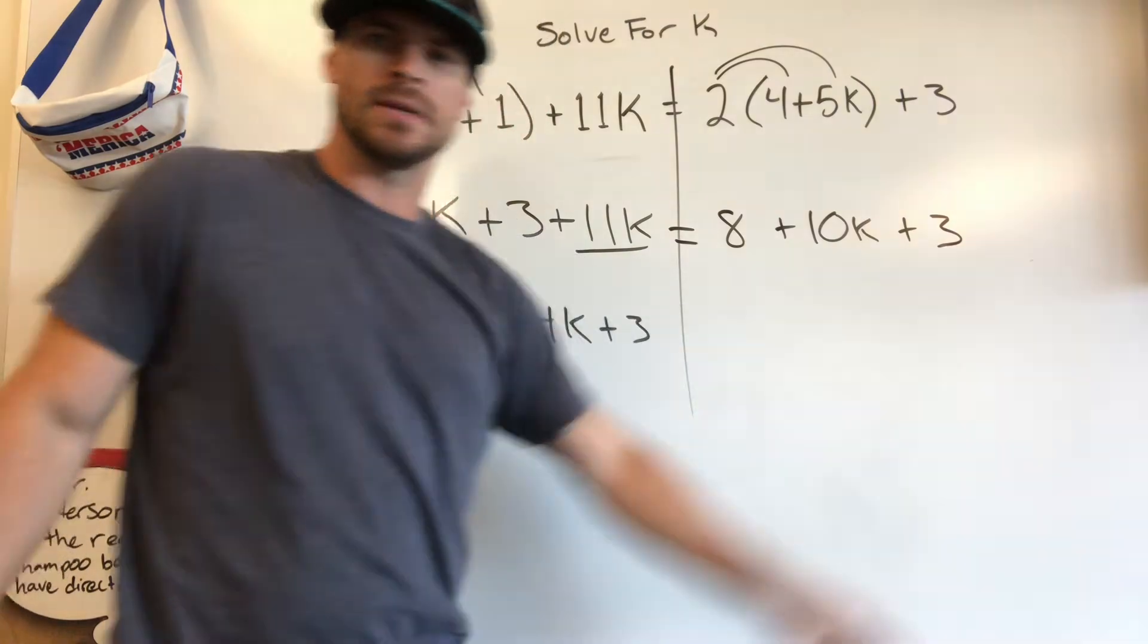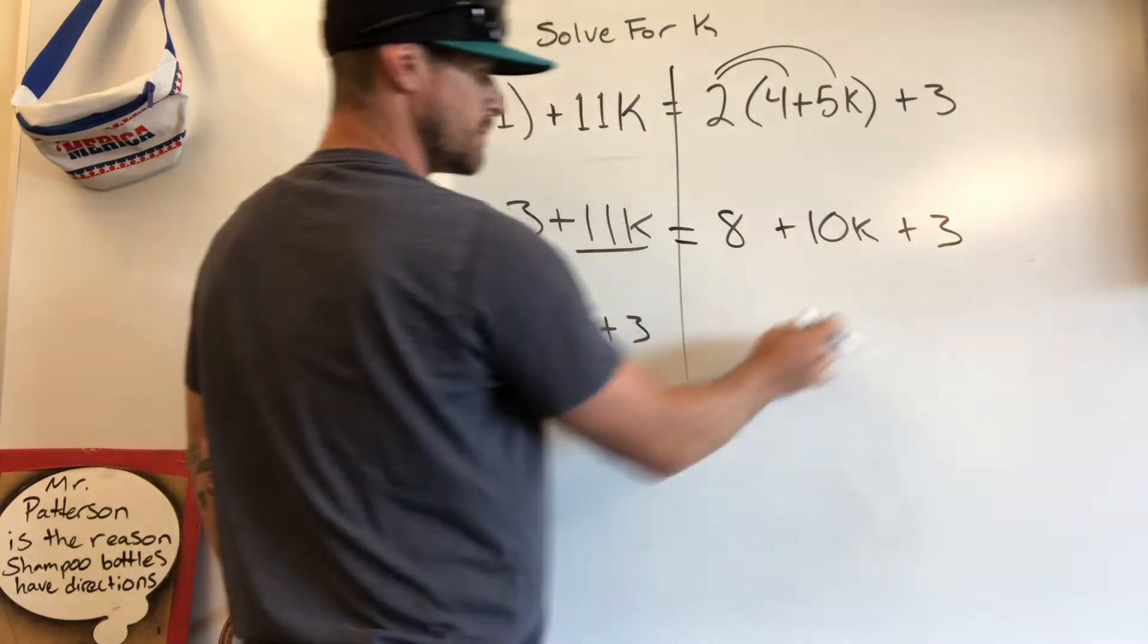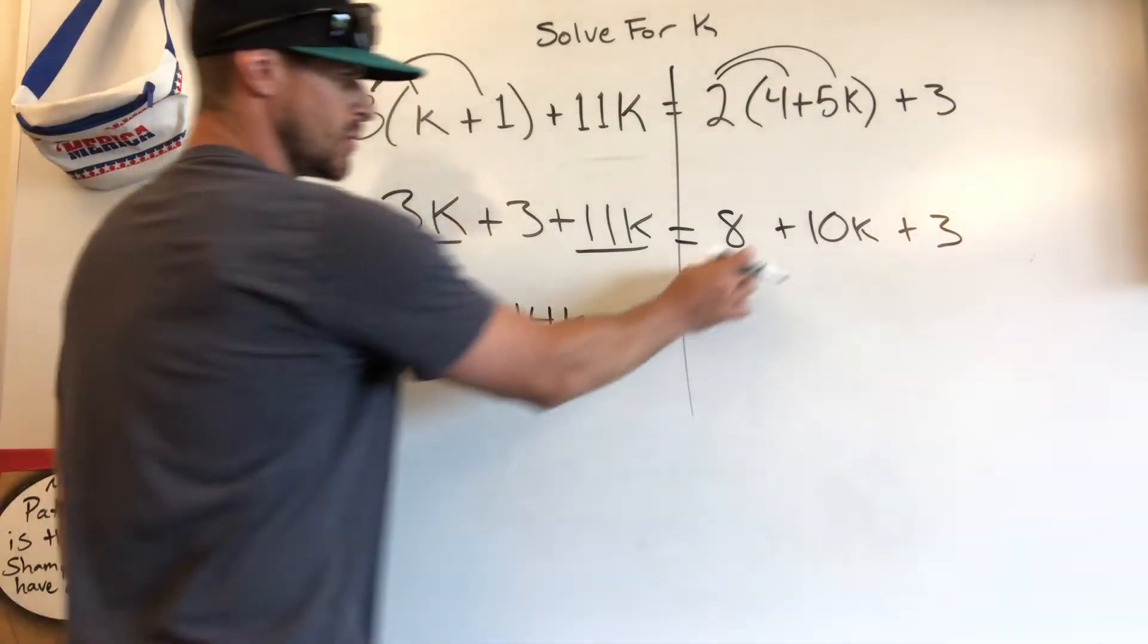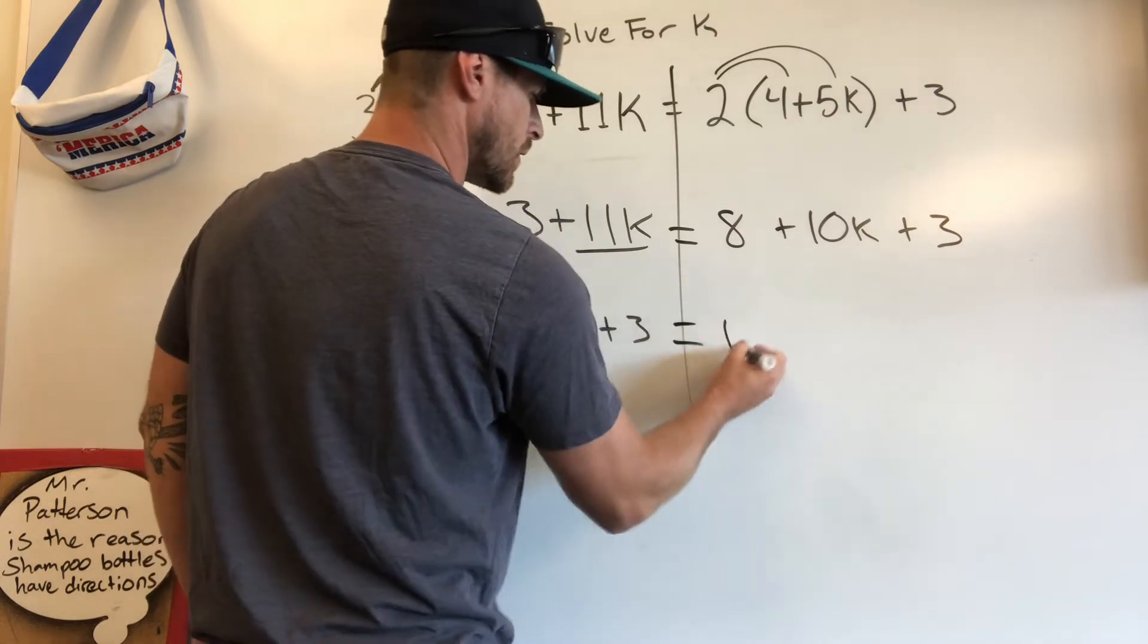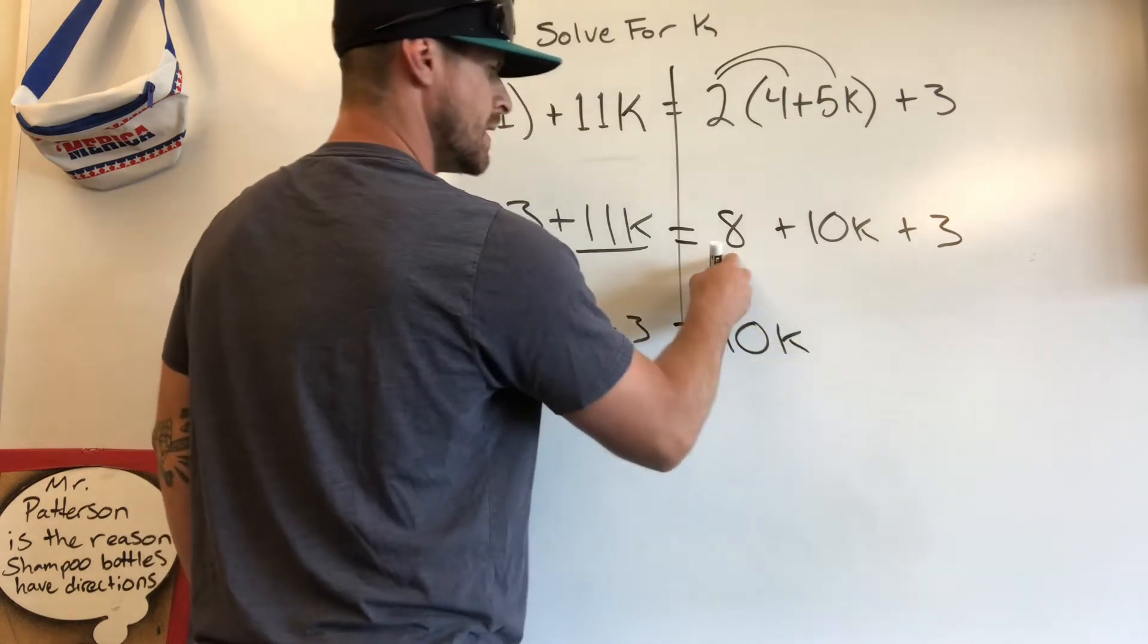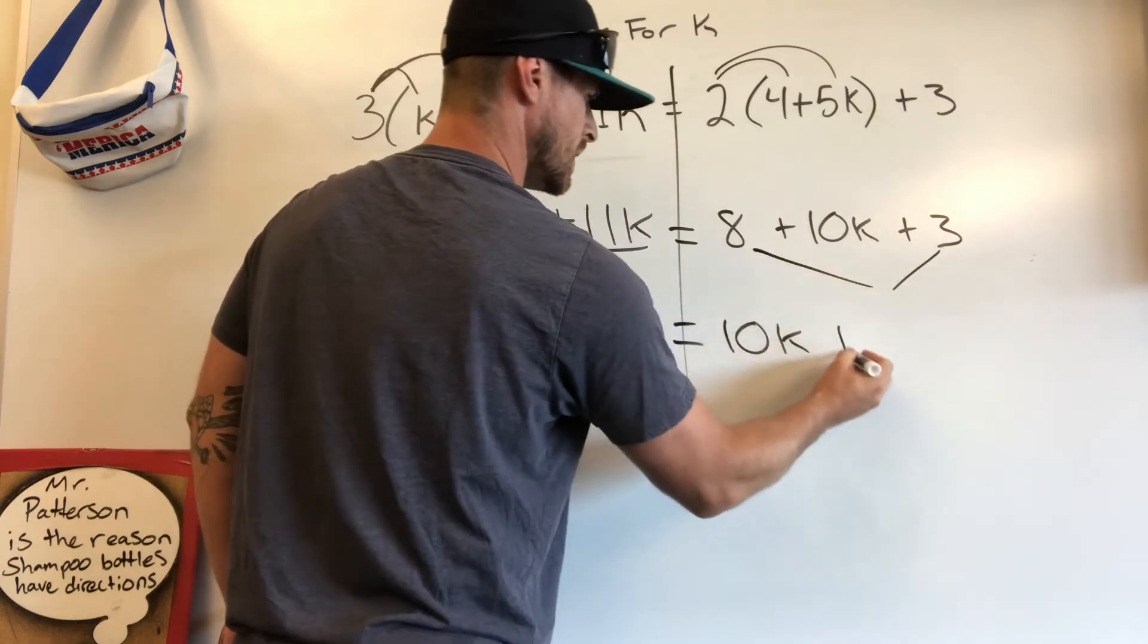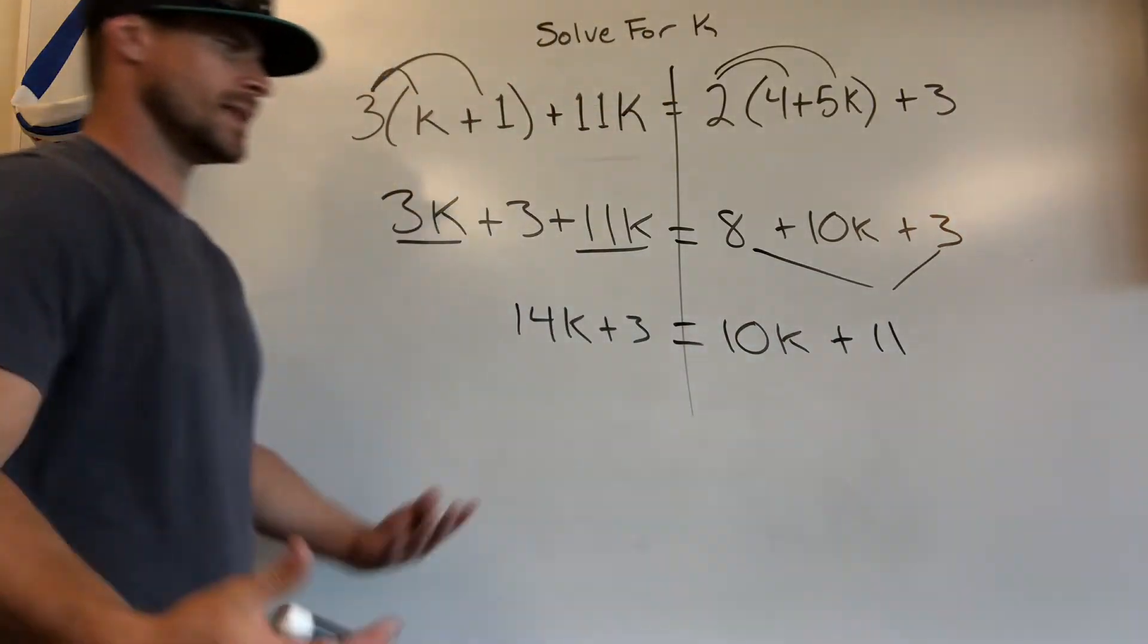Find out which one of these are like terms. That's going to be your constants. 8 and 3 can be combined. We can't combine the 10k because it's got that variable attached to it. So I like to always put the variable term first, so 10k goes down first. 8 added with 3 is going to give me 11.